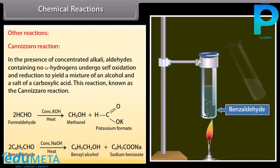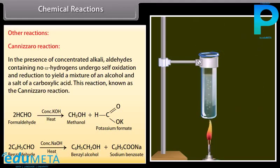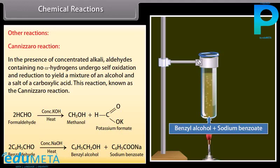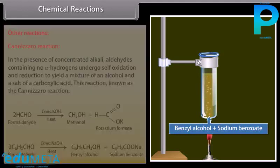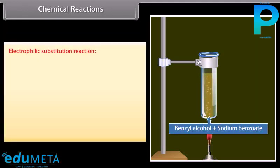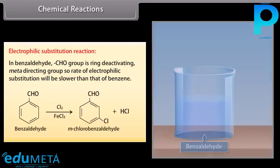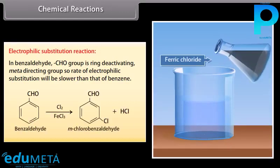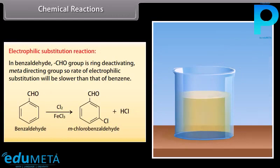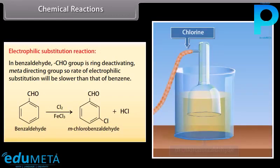Formaldehyde reacts with concentrated potassium hydroxide to form methanol and potassium formate. Benzaldehyde reacts with concentrated sodium hydroxide to form benzyl alcohol and sodium benzoate. Electrophilic substitution reaction: in benzaldehyde, the aldehyde group is a ring-deactivating, meta-directing group, so the rate of electrophilic substitution will be slower than that of benzene. Benzaldehyde reacts with chlorine and ferric chloride to form meta-chlorobenzaldehyde and hydrochloric acid.